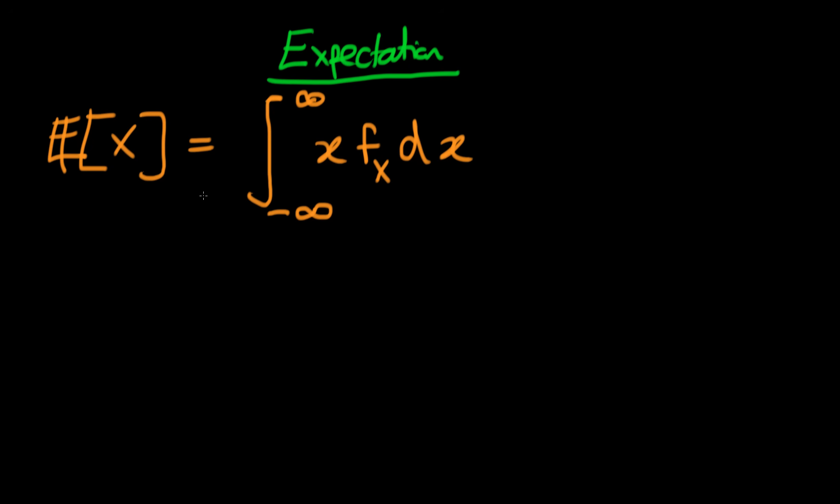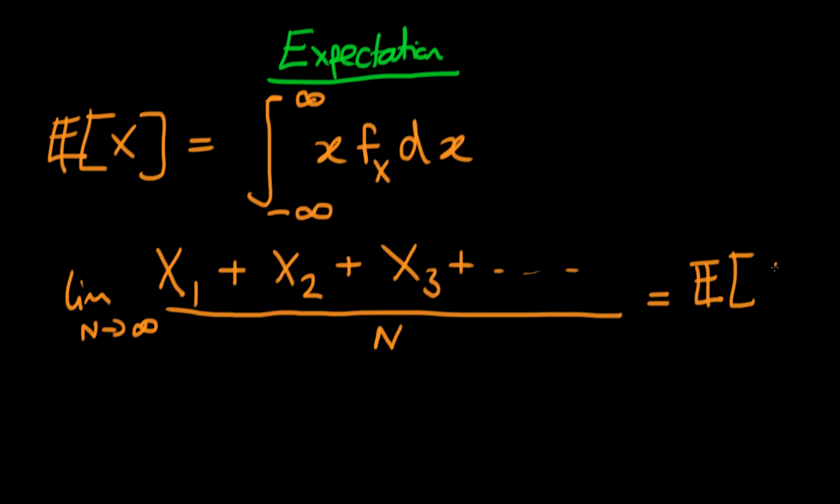The interpretation of the expectation essentially is if I was to repeat the process x an infinite number of times, so the first time I get x₁, the second time I get x₂, and I keep repeating this process stretching to infinity, if I then take the average of this process, dividing by the number of times for which I've carried out this repeat process, in the limit that N goes to infinity this actually represents the expectation of the random variable x.